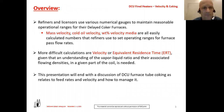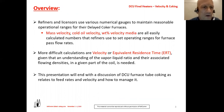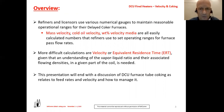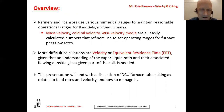Quick overview: refiners and licensors use various numerical gauges to maintain reasonable operating ranges for their furnaces. Mass velocity, cold oil velocity, and weight percent velocity media are all easily calculated numbers that refiners use to set operating ranges for furnace pass flow rates. More difficult calculations are velocity or equivalent residence time, because you need an understanding of the vapor-liquid ratio and their associated densities, which are changing as you move through the coil. The presentation will end with a discussion of DCU furnace tube coking as it relates to feed rates and velocity and how to manage and use the numbers.